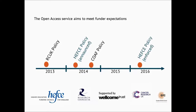Here's a brief timeline of major changes. In 2013, the research councils announced a joint policy — they'd had individual policies for a long time, but in 2013 they all agreed a single united policy, and that was when the university's open access service was set up. In 2014, HEFCE, the Higher Education Funding Council, announced a policy as well, and that's what I'm going to talk about for most of today.